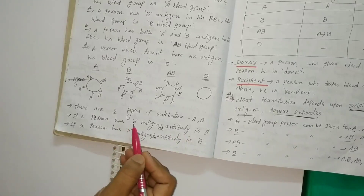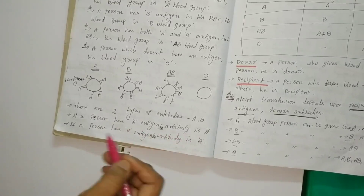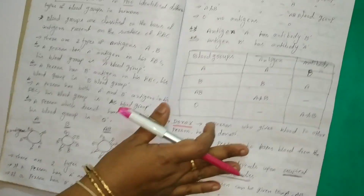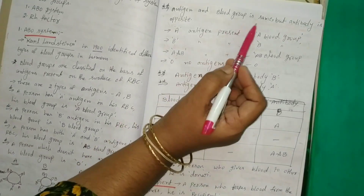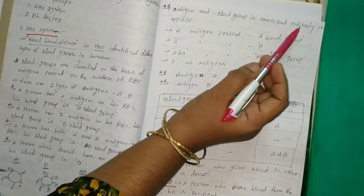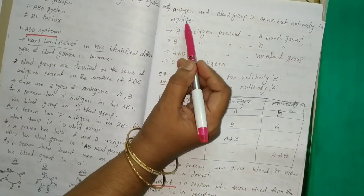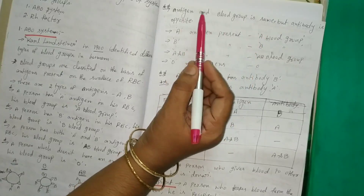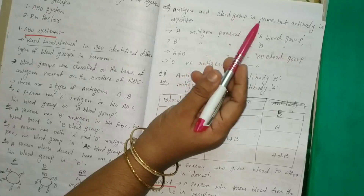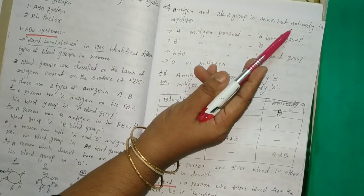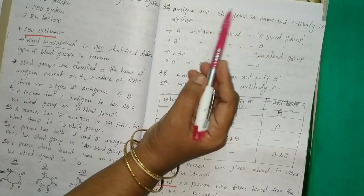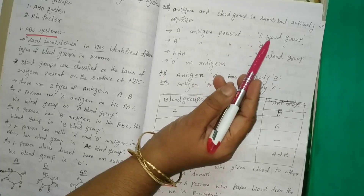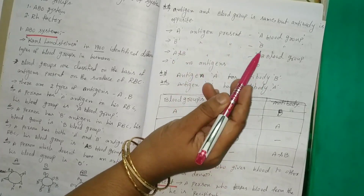If a person has A antigen, antibody is B. If a person has B antigen, his antibody is A. Antigen and blood group are the same, but antibody is opposite. For example: A antigen means A blood group. But antibody is different — it is B. A antigen present: A blood group. B antigen present: B blood group.